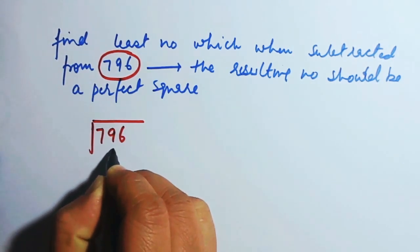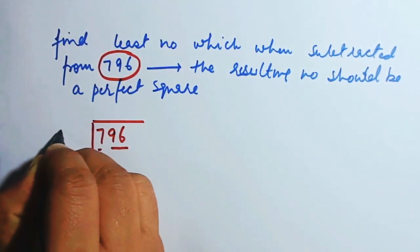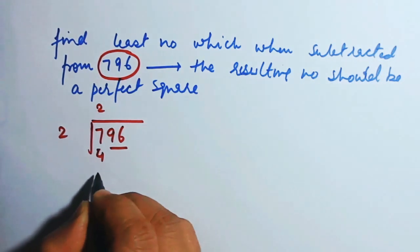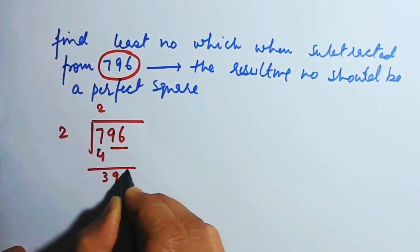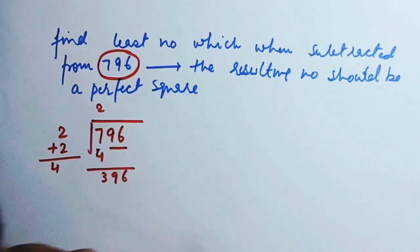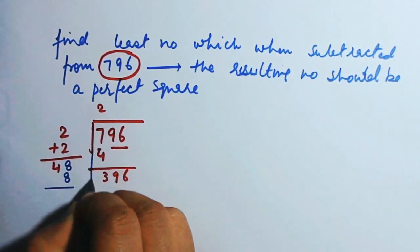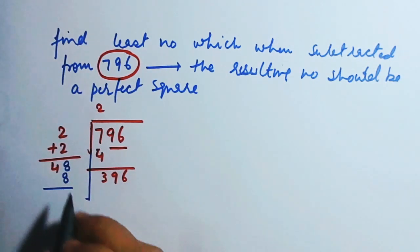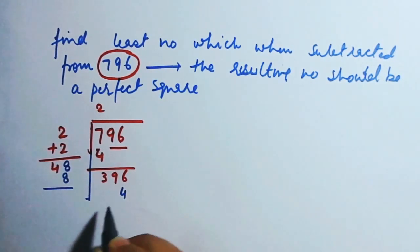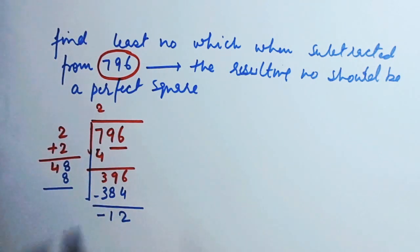We shall be going for the division method, which is a quicker method. First, group it from the back in pairs. Start from two — set from seven. Two times two is four; you cannot take three because three times three becomes nine. Subtract: seven minus four is three. Bring down 96. Add two over here to get four, and put a number beside four and multiply with the same number to get close to 396. Forty-eight times eight: eight eights are 64, and eight fours are 32, giving 384.